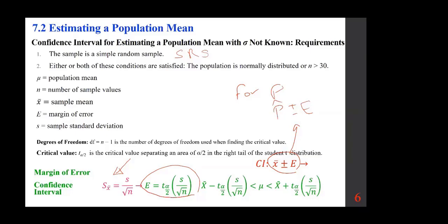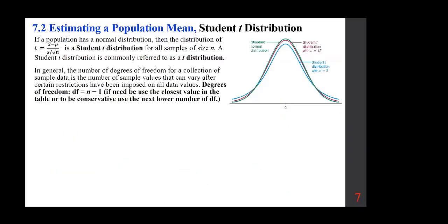If sigma is known, we use the z-table. The t-distribution is used in most cases simply because the standard deviation is missing. If a population has a normal distribution, the distribution of t = (x-bar − mu) / (s / sqrt(n)) is a student t-distribution for all samples of size n.